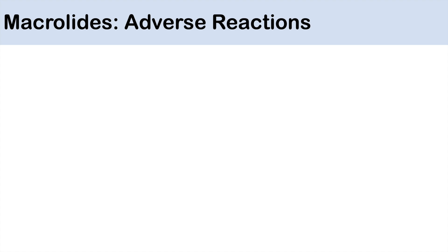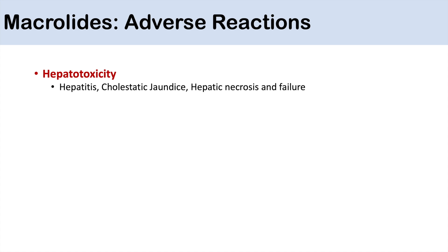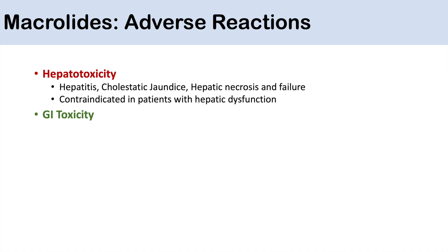There are particular risks for using macrolides. Side effects include hepatotoxicity, which is one of the major side effects to be aware of. Patients can experience hepatitis, cholestatic jaundice, hepatic necrosis, and liver failure from macrolide use. Therefore, macrolides are contraindicated in patients with hepatic dysfunction. Additional adverse reactions include GI toxicity, causing nausea and diarrhea through activation of motilin receptors.